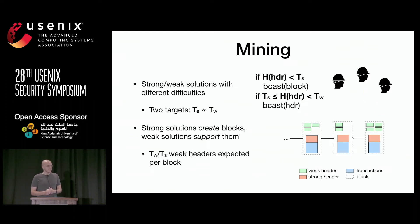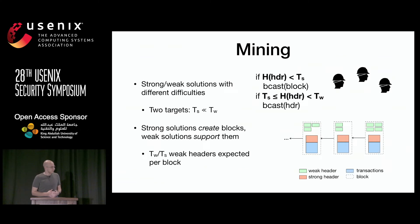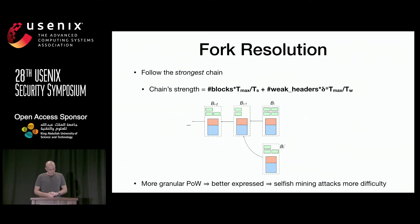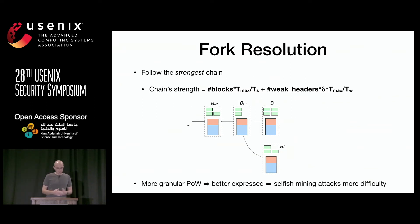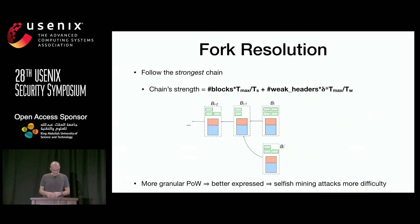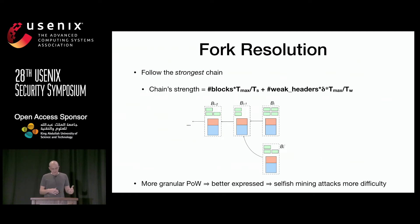Conceptually, weak headers act as votes or support for a block, while blocks are created through strong solutions. For fork resolution, we follow the strongest chain rule, similar to Bitcoin, but we change the calculation of chain strength. Chain strength is computed as the number of blocks multiplied by the difficulty of finding a strong header (T_max), plus the number of weak headers in the chain multiplied by the difficulty of finding a weak header, multiplied by a parameter delta. When two concurrent blocks exist, miners immediately follow the one with more weak headers because it is stronger.